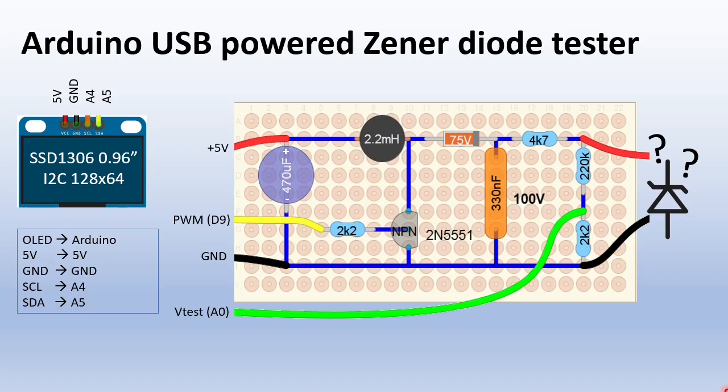You can build the circuit on a prototyping board. The placement is like in the schematic. I will leave a link in the description with the schematic and this board setup. Then connect the circuit to the Arduino, 5 volt, PWM, ground and the analog input.